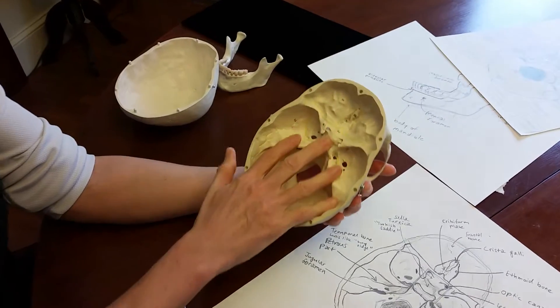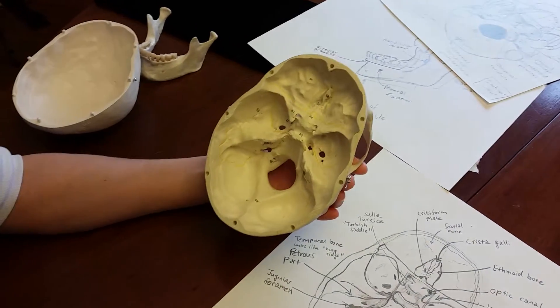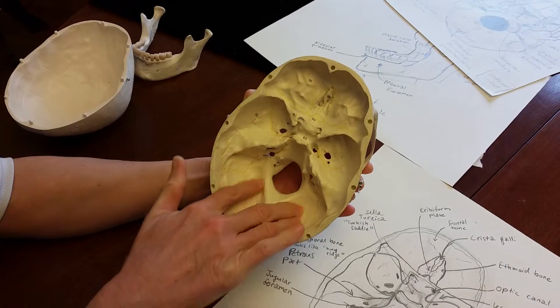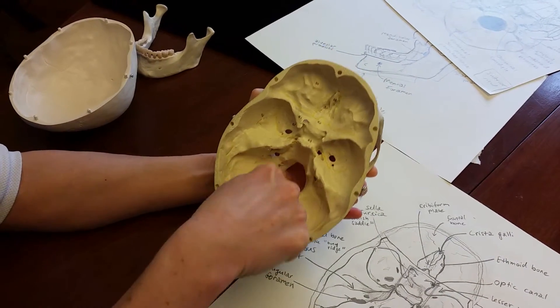Now the top-down view of the floor of the skull is what we're interested in next. Here you can see the inside of the occipital bone and the foramen magnum.